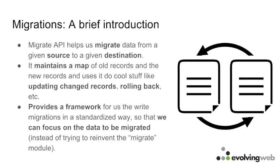The Migrate API helps us migrate data from a given source to a given destination. In Drupal 8, this has become really nice — we have separate plugins for handling sources and destinations. We specify the data source and tell it to create nodes or taxonomy terms, and it does exactly that. It's become very organized in Drupal 8. In Drupal 7 we had to write classes, but in Drupal 8 one can write a migration in five to ten minutes and it magically works.